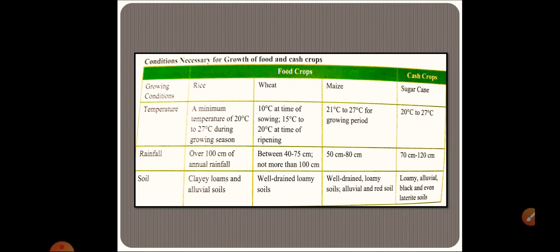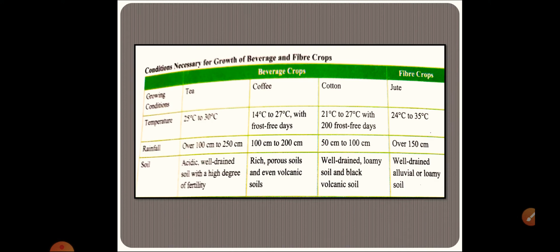You can see that there is a variation of required temperature, variation of required rainfall and soil for a particular crop to grow. Now let's move towards the beverage crops. What were the beverage crops?